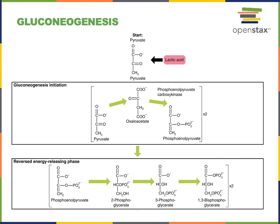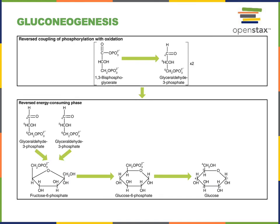Lactic acid can be converted back to pyruvate, and this will produce an NADH molecule. Then pyruvate will enter into gluconeogenesis as it is converted to phosphoenolpyruvate. And then from phosphoenolpyruvate, the energy-releasing phase of glycolysis can essentially be run in reverse, generating 1,3-bisphosphoglycerate. Then glyceraldehyde-3-phosphate dehydrogenase can catalyze the reverse reaction from glycolysis, converting 1,3-bisphosphoglycerate into glyceraldehyde-3-phosphate, and consuming NADH in the process.